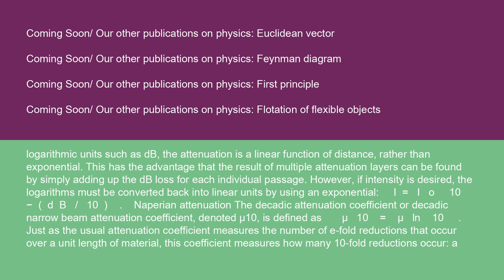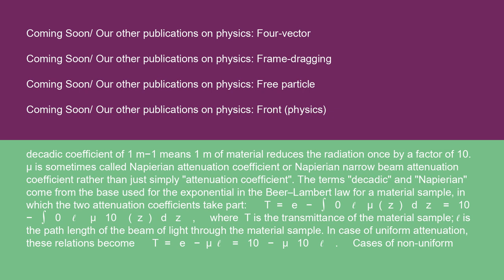However, if intensity is desired, the logarithms must be converted back into linear units by using an exponential: I = I₀ · 10^(−dB/10). The decatic attenuation coefficient, or decatic narrow beam attenuation coefficient, denoted μ₁₀, is defined as μ₁₀ = μ · ln10. Just as the usual attenuation coefficient measures the number of e-fold reductions that occur over a unit length of material, this coefficient measures how many 10-fold reductions occur. A decatic coefficient of 1 m⁻¹ means 1 m of material reduces the radiation once by a factor of 10. μ is sometimes called the Napierian attenuation coefficient rather than simply attenuation coefficient. The terms decatic and Napierian come from the base used for the exponential in the Beer-Lambert Law for a material sample.